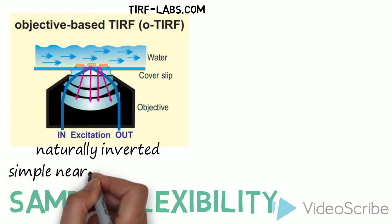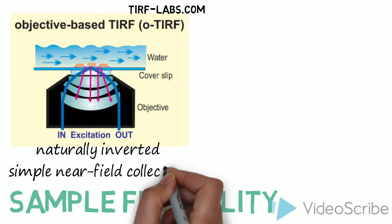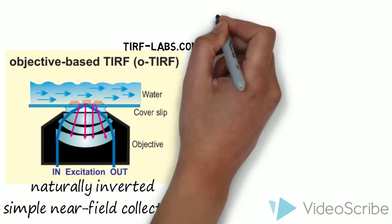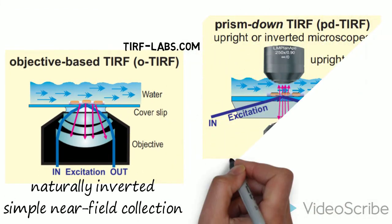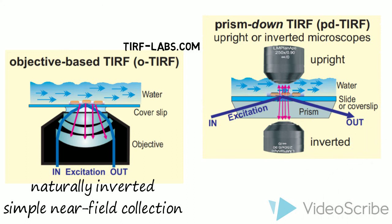P-TIRF, on the other hand, has the evanescent wave generating on the opposite side of the sample, away from the objective. This means that the fluorescent signal needs to pass through the bulk of the sample to reach the objective.